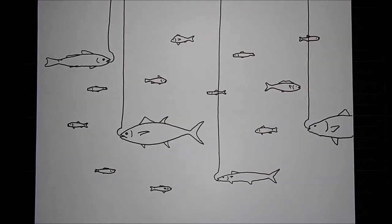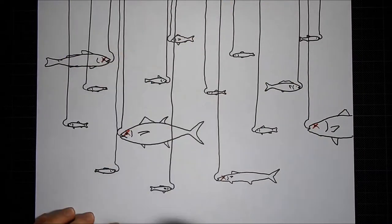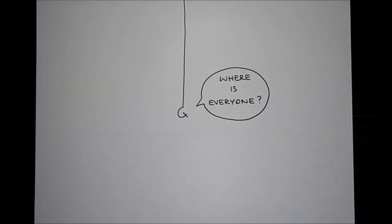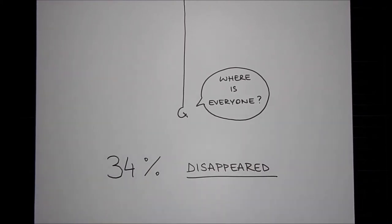In areas of high fishing activity, entire fish populations began to disappear altogether. In 2017, it was estimated that 34% of all such populations had disappeared due to overfishing.